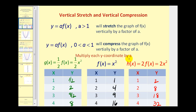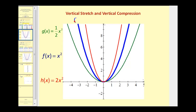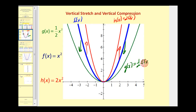Once you identify the value of a, to find the y coordinates of the transformed function with the same x coordinates, simply multiply each y coordinate by a and leave the x coordinates the same. Looking at these three graphs on the same coordinate plane, the original function is in blue. Stretching by a factor of two gives h of x equals two times f of x, and compressing by one half gives g of x equals one half times f of x.